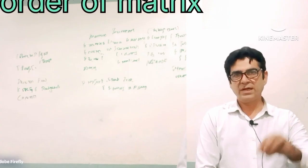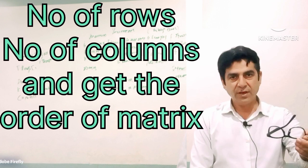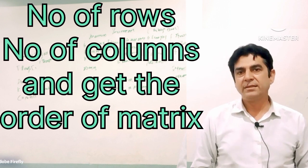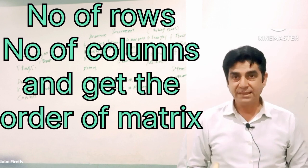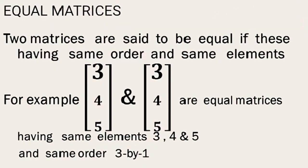Very easy. Just find the number of rows and number of columns, and you can find the order of matrix quite easily. Now another concept: equal matrices.